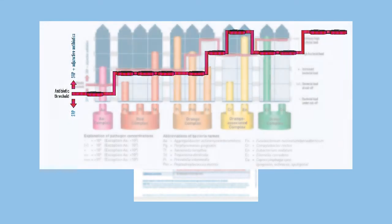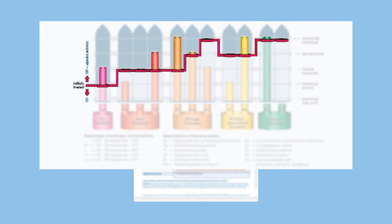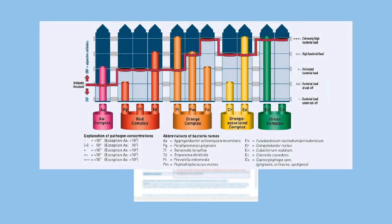In this case, an antibiotic treatment threshold is indicated by a red line, showing you whether your patient's bacterial load can be treated with mechanical intervention or whether adjuvant administration of antibiotics is necessary. All bacterial concentrations above the red line treatment threshold and reaching into the dark blue area require the adjuvant administration of antibiotics, depending on the clinical picture.